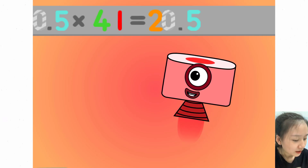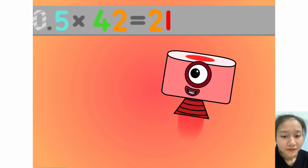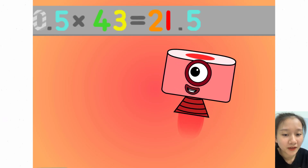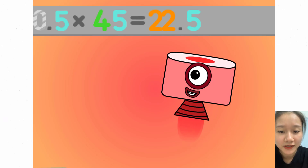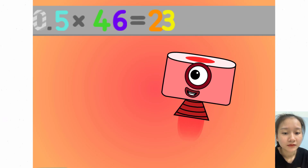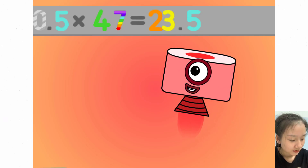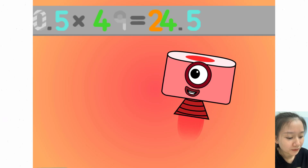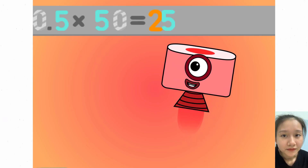0.5 times 41 equals 20.5. 0.5 times 42 equals 21. 0.5 times 43 equals 21.5. 0.5 times 44 equals 22. 0.5 times 45 equals 22.5. 0.5 times 46 equals 23. 0.5 times 47 equals 23.5. 0.5 times 48 equals 24. 0.5 times 49 equals 24.5. 0.5 times 50 equals 25.